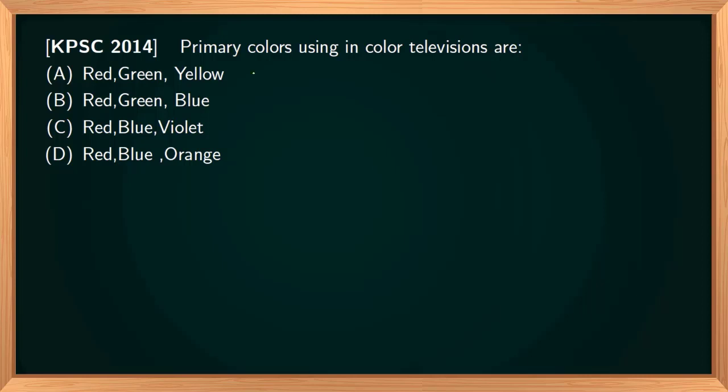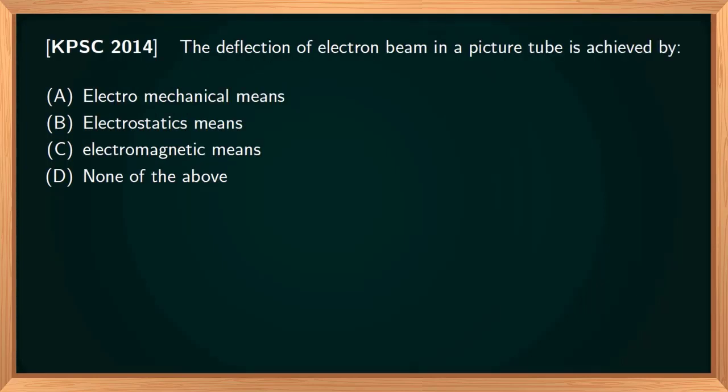The primary colors used in color television are red, green, and blue. All other colors are derived from these three primary colors. So the correct option is red, green, and blue.